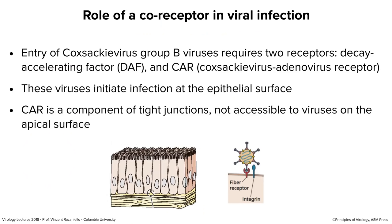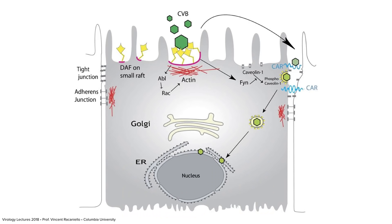Sometimes two receptors are needed for infection. Coxsackievirus requires two receptors: DAF and CAR. This virus infects at epithelial surfaces. CAR, the second receptor, is a component of tight junctions. Viruses binding apical surfaces of cells can't get into tight junctions because they're tight. The virus first binds DAF on the apical surface, but that binding alone does not lead to virus entry.